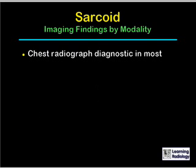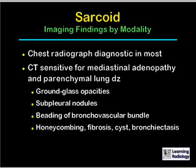The imaging findings in sarcoid by modality: chest radiographs are diagnostic in most cases. CT is more sensitive than radiography for mediastinal adenopathy and for parenchymal lung disease. On CT we can see ground glass opacities, subpleural nodules, innumerable small nodules, prominence of the reticular markings, beading of the bronchovascular bundles, and in end-stage disease, honeycombing, fibrosis, cyst formation, and bronchiectasis.